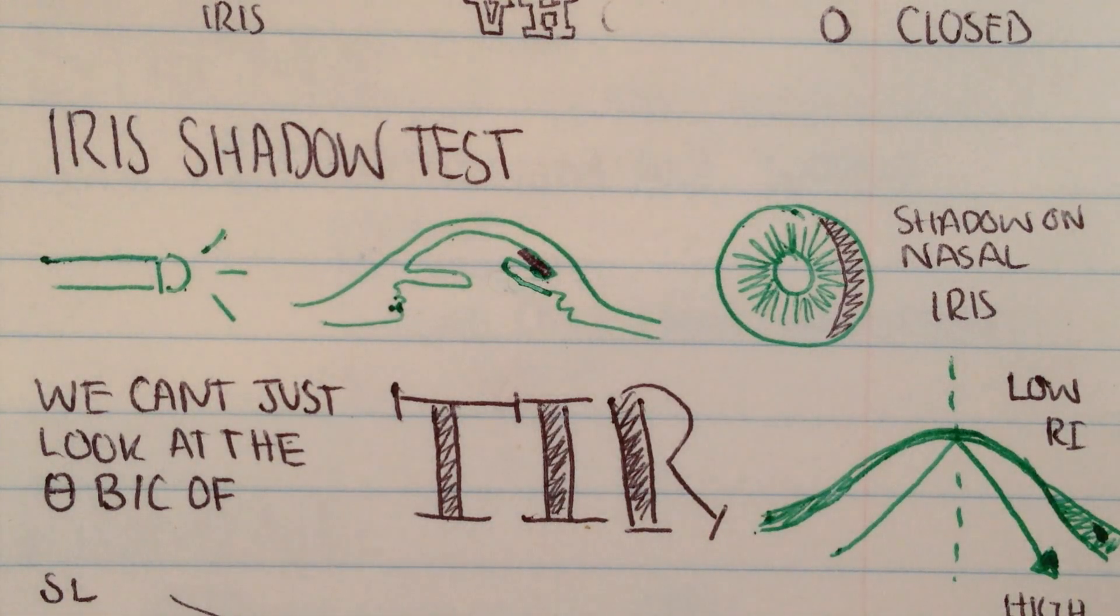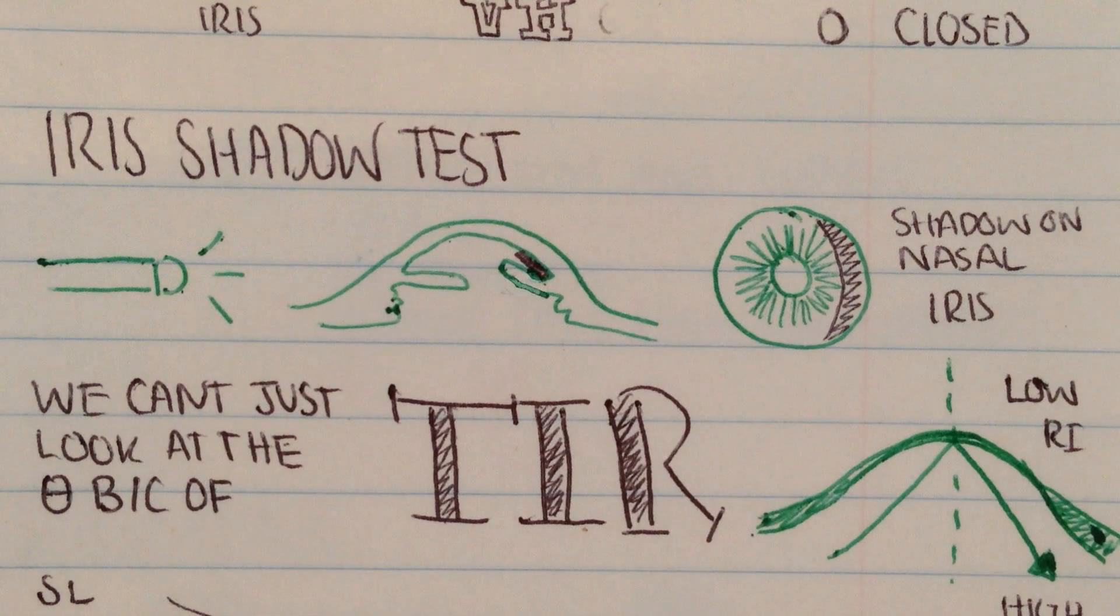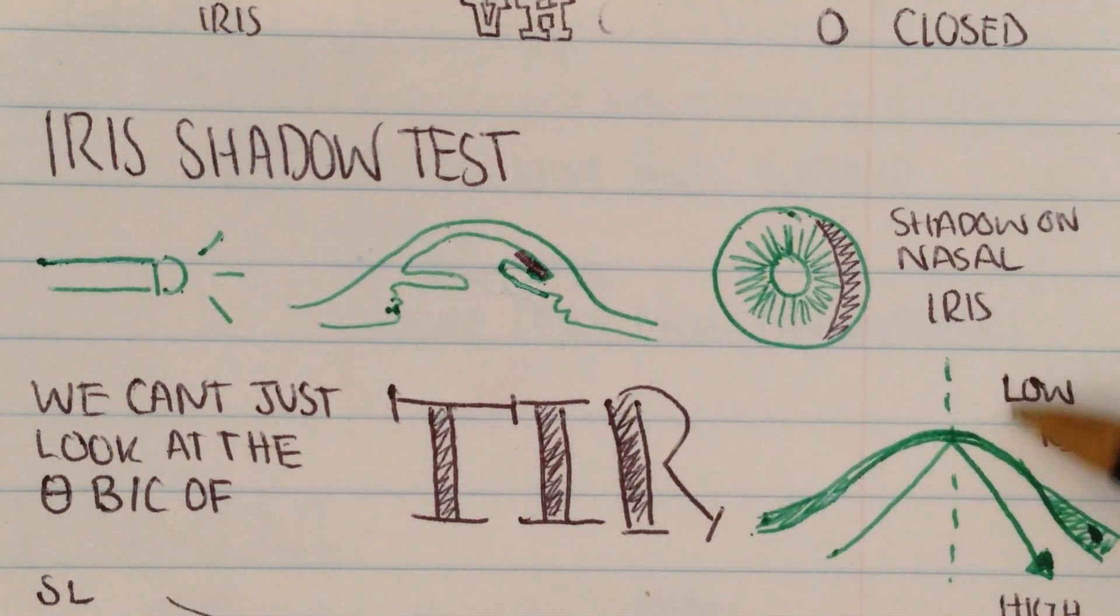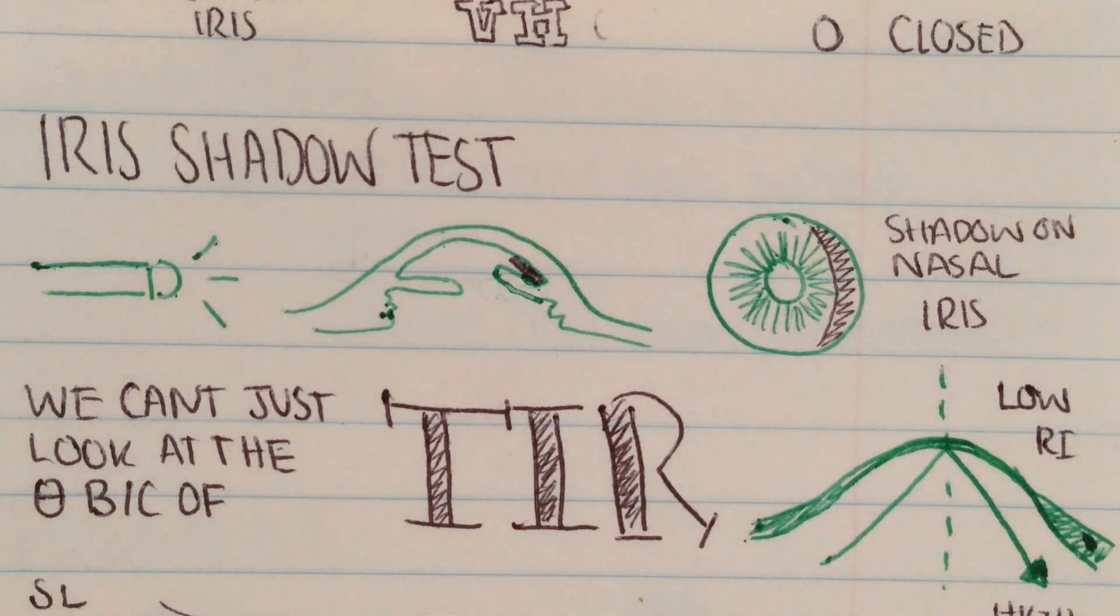The reason why we just can't look at the angle directly and we need a goniolens is because of the concept of total internal reflection. The angle itself is hidden, and we need a mirror to actually see it.